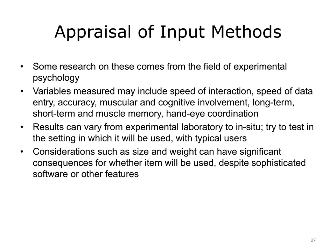Selection of input methods must depend on knowledge about their efficiency, some of which comes from the field of experimental psychology. Variables measured may include speed of interaction across different user types and experience levels, potential and actual common speeds of data entry, accuracy, muscular and cognitive involvement and limitations, long-term and short-term and muscle memory, and hand-eye coordination. Results can vary from the experimental laboratory to field conditions, so it is important to test methods in the setting in which they may be used with typical users. Size, weight, and similar considerations can have consequences for whether a device will be used in practice, especially for clinical roles such as bedside nursing.